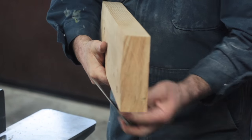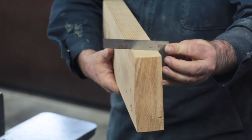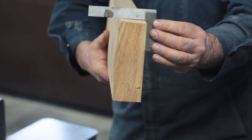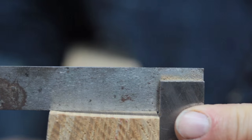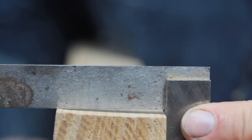The purpose of the second stage on the jointer is to make an edge that's square to the face of the board we just milled. And as you can see we're a long way from that now. But the job of the jointer is to fix that and that's what we're going to do next.